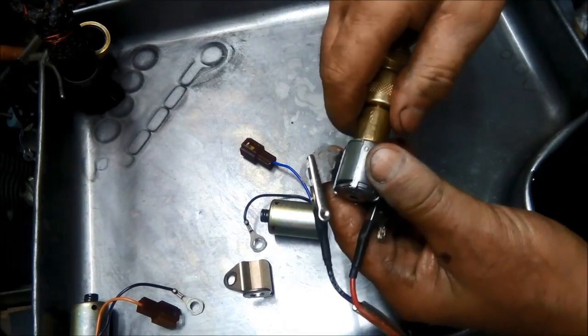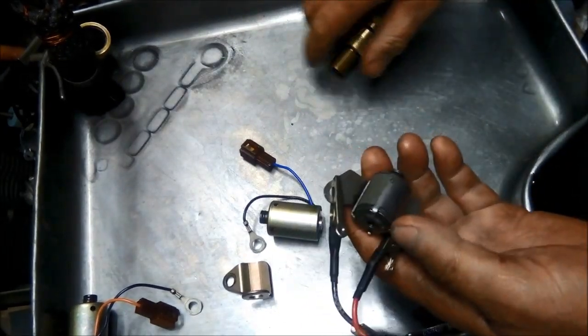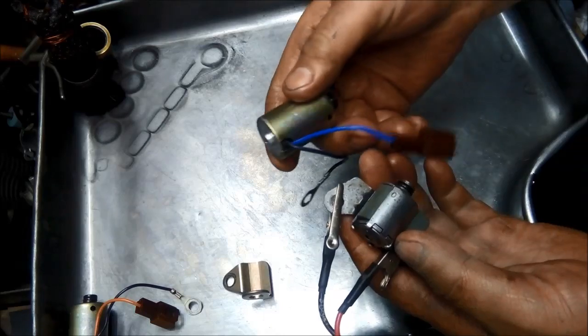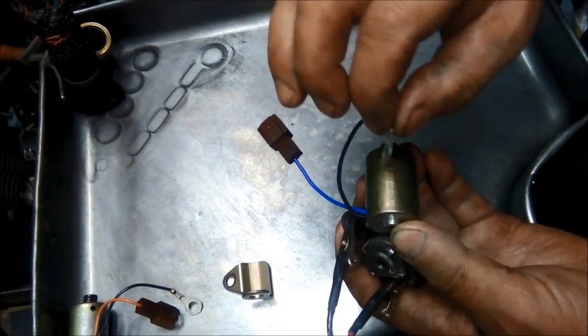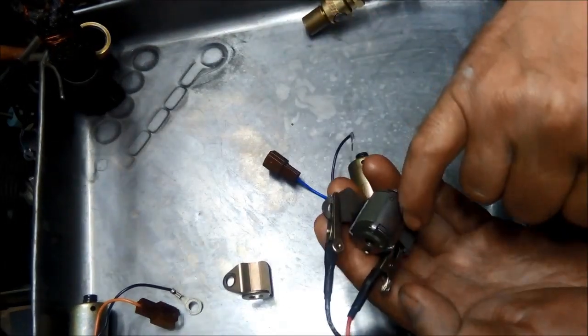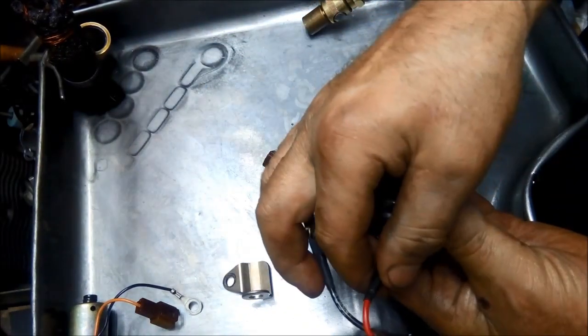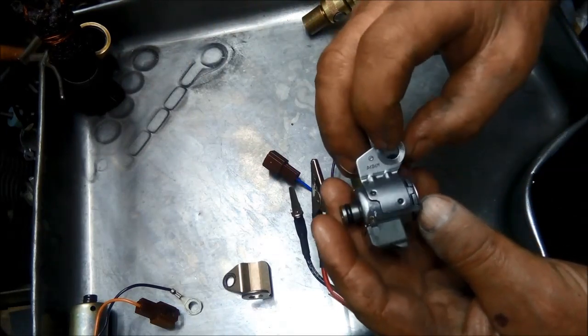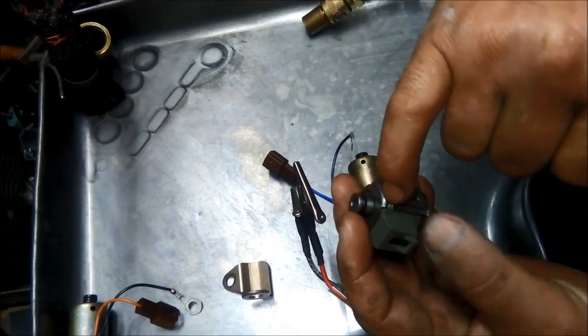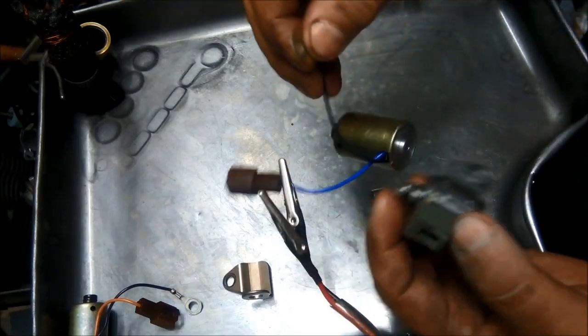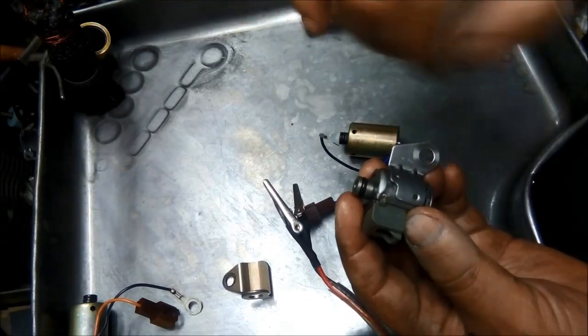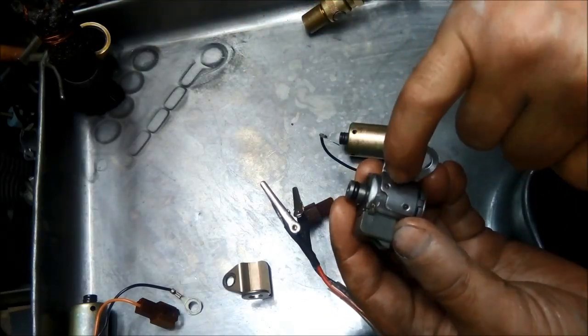So the difference with the Rostra kit, they actually get you to bolt that wire to the valve body, whereas here, the wire, instead of it going to this, is actually soldered onto the body of the solenoid.